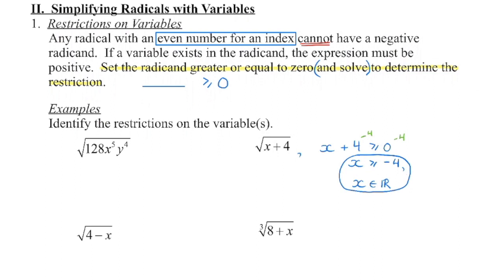Be careful — don't just say x has to be greater than or equal to 0. If I put 0 in, 0 plus 4 is 4, that's okay. But if I put negative 1 in, negative 1 plus 4 is positive 3, and I can take the square root of positive 3. So the restriction is not automatically greater than or equal to 0. You have to find the value of that variable that makes this entire expression greater than or equal to 0.